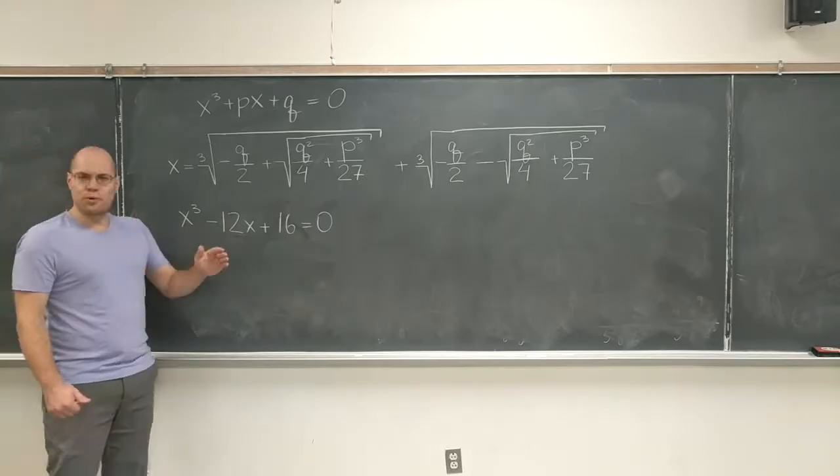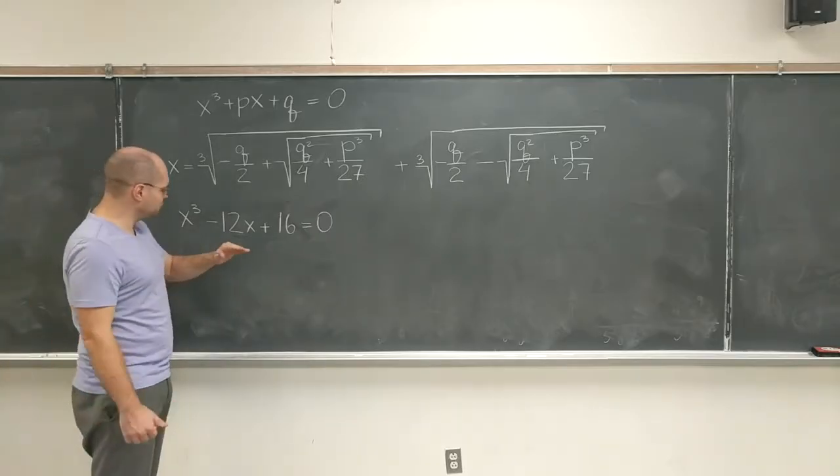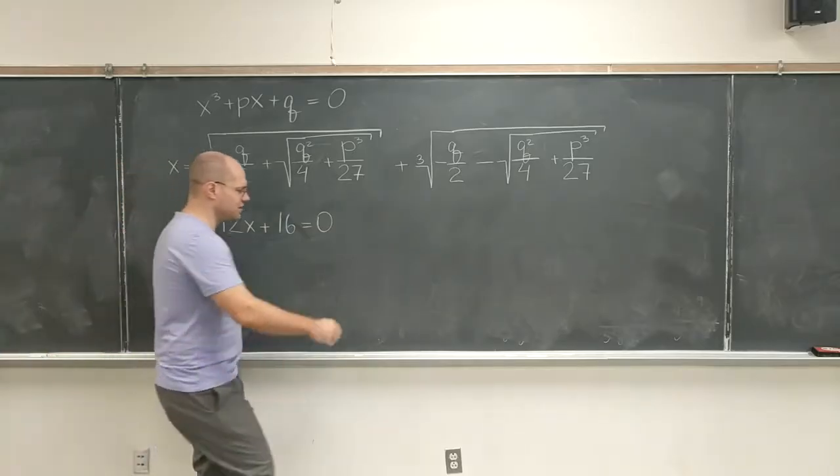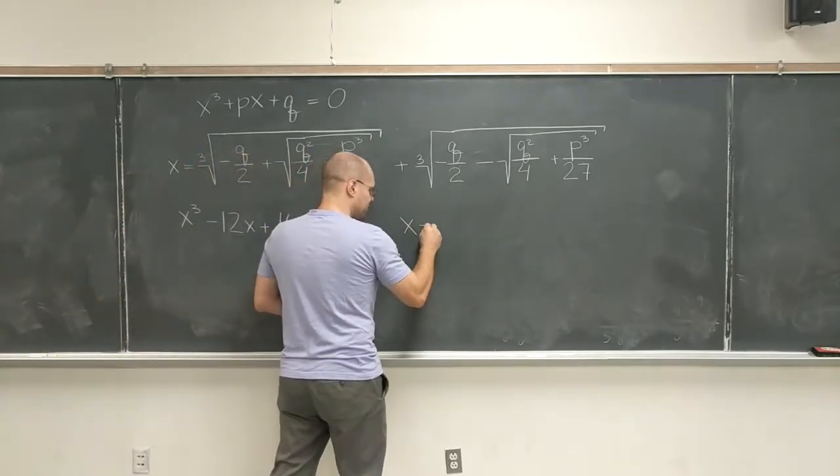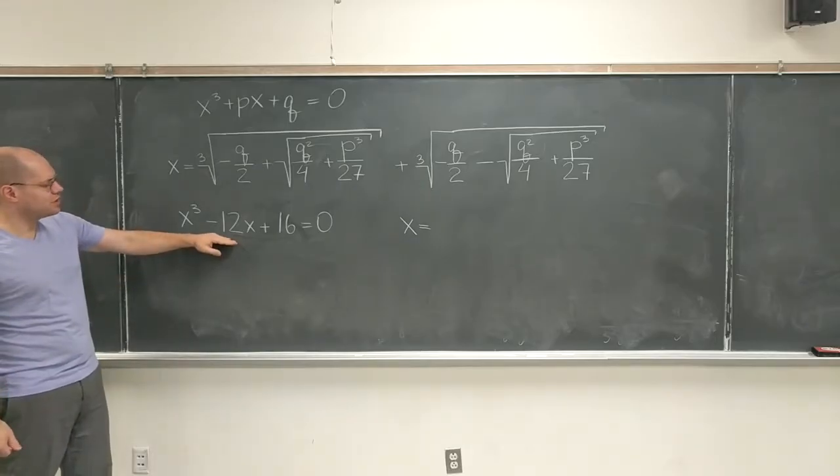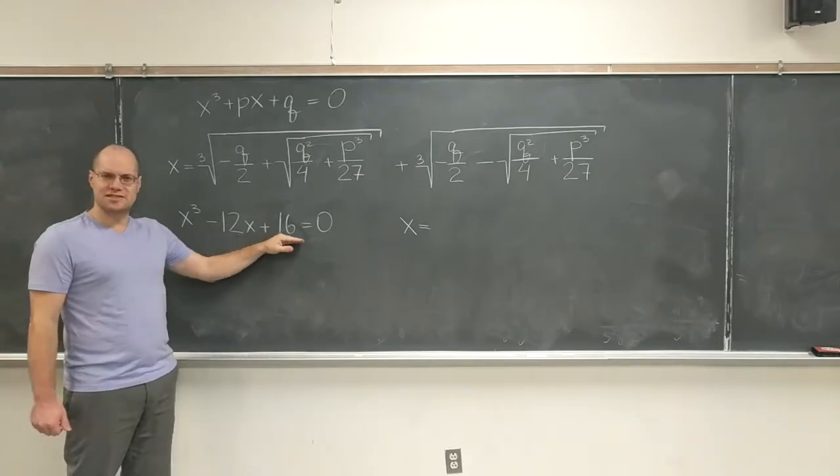And so we'll start with the most boring example, I came up with a few, so here is one, so let's just see what happens. So let's identify P and Q and just see what we get. So in this case P is minus 12 and Q is 16.